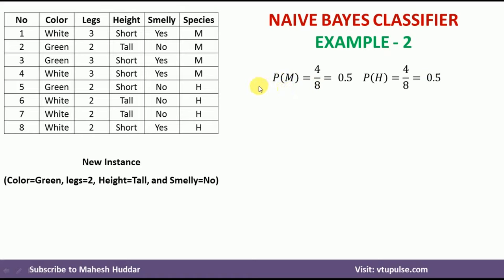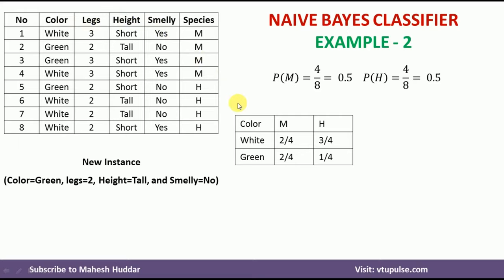Now we need to calculate the conditional probabilities of each attribute. The first attribute is color, with possible values white and green and possible outcomes M and H. We count how many times white appears in M examples and how many times it appears in H examples. White appears two times in M examples and three times in H examples, giving 3/4. For green: it appears two times in M and one time in H.